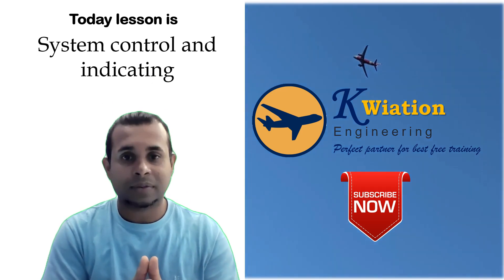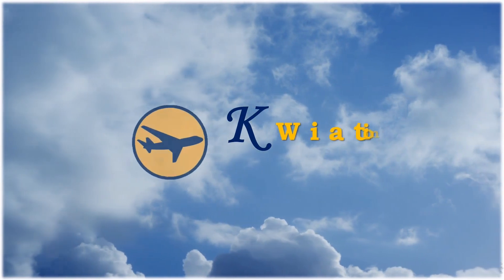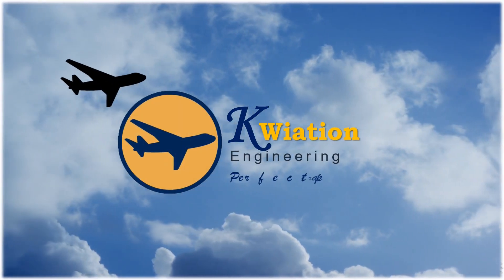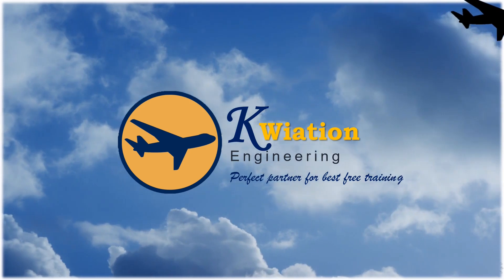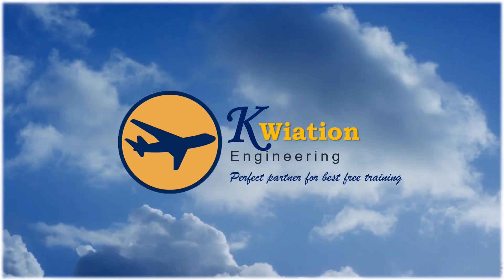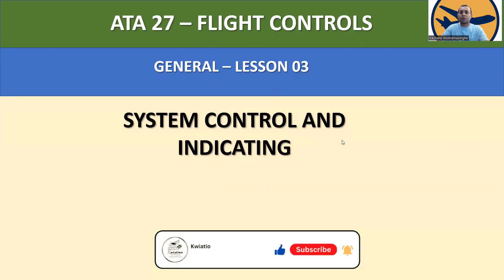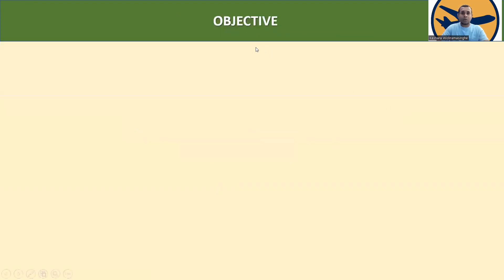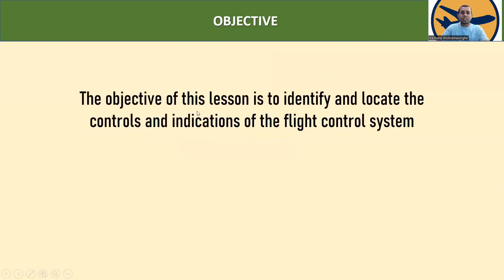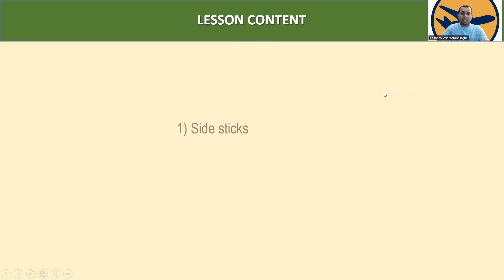ATA Chapter 27 flight controls general, lesson number three: system control and indicating. The objective of this lesson is to identify and locate the controls and indications of the flight control system.